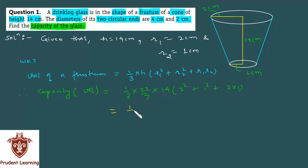On further simplification this gives us 1 by 3 into 22 into 2, which is 44, into (4 plus 1 plus 2), which equals 1 by 3 into 44 into 7.